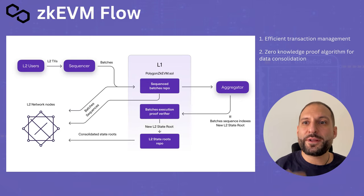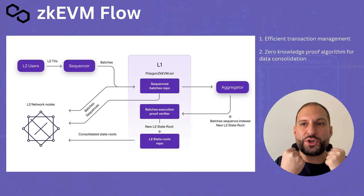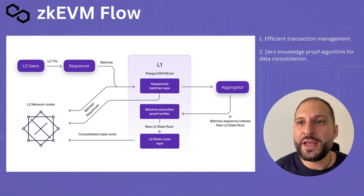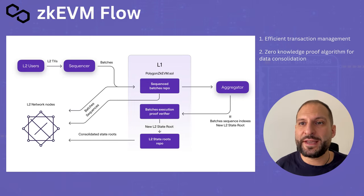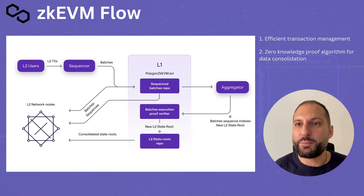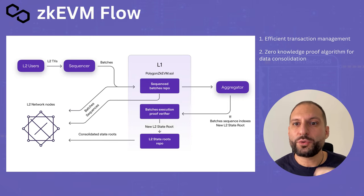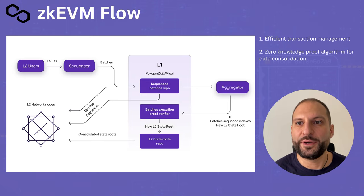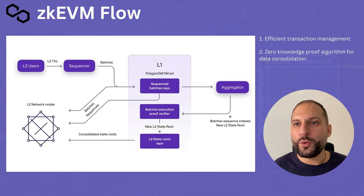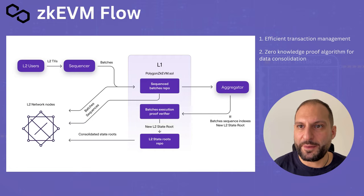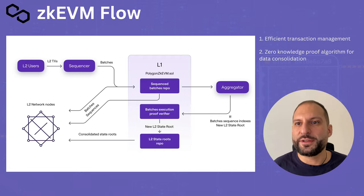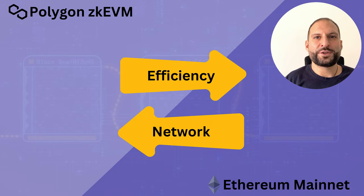In the second step, there is the aggregator. The aggregator takes these transactions and then creates a proof with a zero-knowledge algorithm to validate and consolidate them. When these steps are passed, the transactions are considered valid.